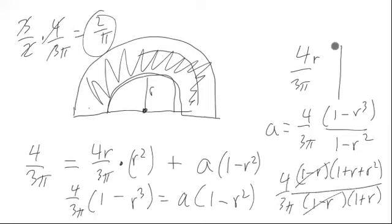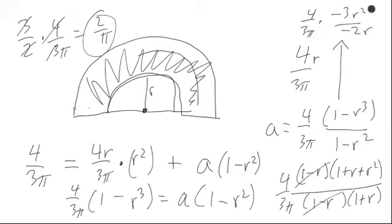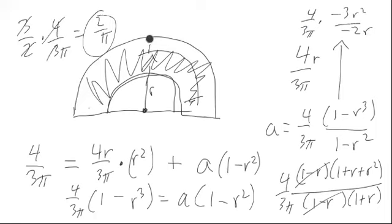If we use L'Hôpital's rule instead, we take the derivative of the top and bottom: derivative of (one minus r³) is minus three r squared, and derivative of (one minus r²) is minus two r. Plugging in r equals one gives three halves, so four over three π times three halves equals two over π — the same result. We now have two basic ways of computing this. In the limiting process, we're scrunching r closer and closer to one so the arch becomes a thin wire, and in any case we get y-bar equals two over π.